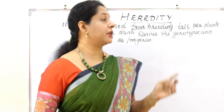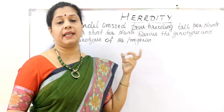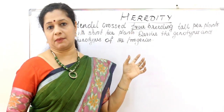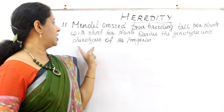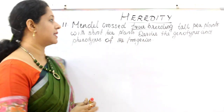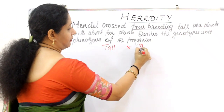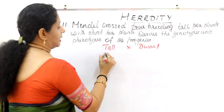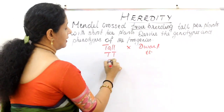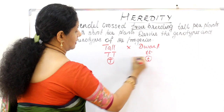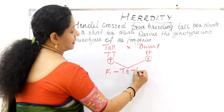The cross involves true breeding — pure line homozygous — tall pea plants crossed with short pea plants. The tall plant genotype is capital T capital T (dominant character) and the dwarf plant genotype is small t small t (recessive character). In the F1 generation, capital T is present.